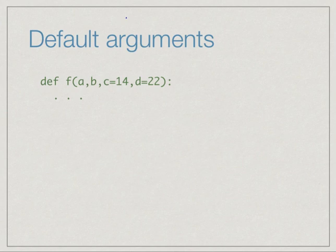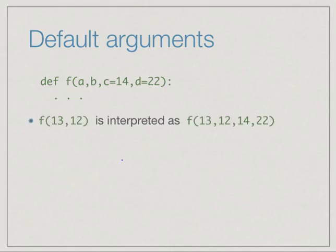Here is a simple prototype. Suppose we have a function with four arguments a, b, c, d, and we have c as a default value 14 and d as a default value 22. Then if we have a call with just two arguments, then this will be associated with a and b, so this will be interpreted as f(13, 12), and for the missing arguments c and d you get the defaults 14 and 22.